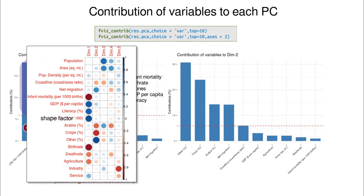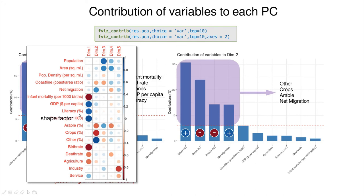Now let's look at the second dimension. Again, we have the reference line of 1 divided by the number of variables. Here only four variables are clearly above that line: 'other', 'crops', 'arable', and 'net migration'. Looking at the signs, 'other' and 'net migration' are positively correlated while 'crops' and 'arable' are negatively correlated. Net migration could be a sign of an industrialized country, but that's not certain — this provides additional flavor to the first dimension's description.